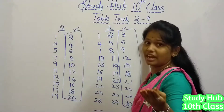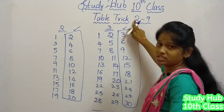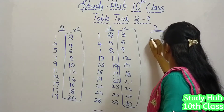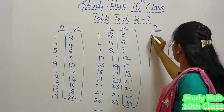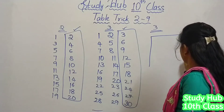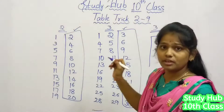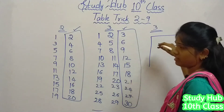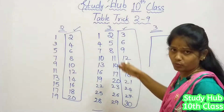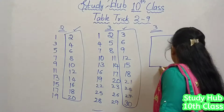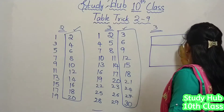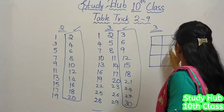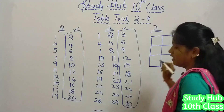Some other tips and tricks to remember the tables from 2 to 9. For 3, let us consider a 3 by 3 table — a table which contains 3 rows and 3 columns. Rows means horizontal lines and columns means vertical lines. So we have row 1, row 2, row 3, and column 1, column 2, column 3.